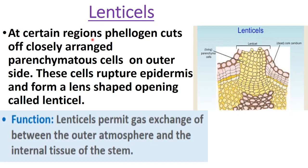Now, lenticels. At certain regions, phellogen (cork cambium), which is active during secondary growth of the plant, cuts off closely arranged parenchymatous cells on its outer side. As these cells increase in number, there is pressure on the epidermis — so these cells rupture the epidermis and form a lens-shaped opening called a lenticel.